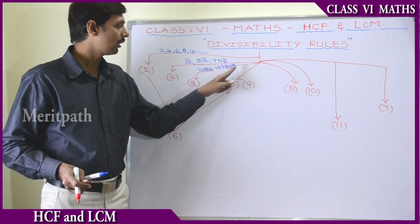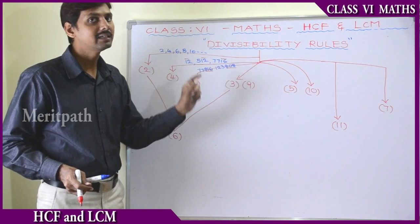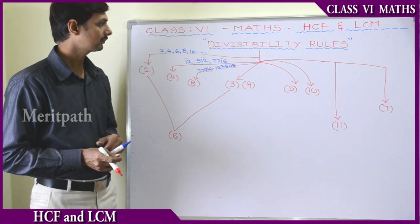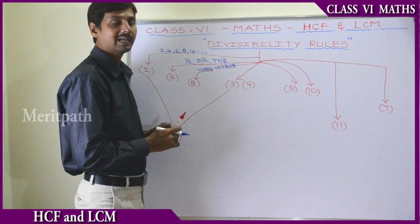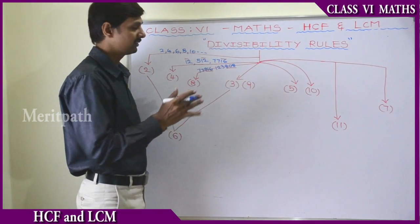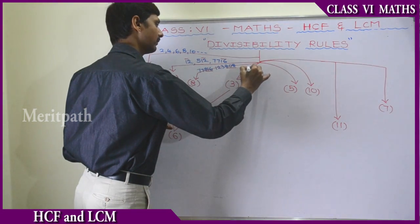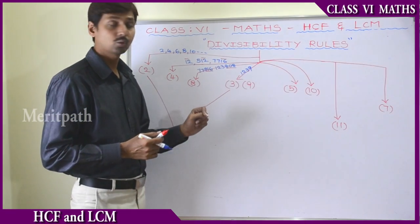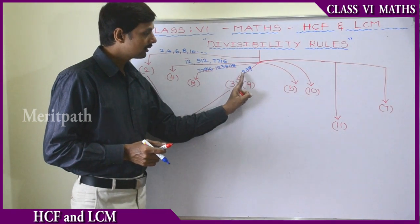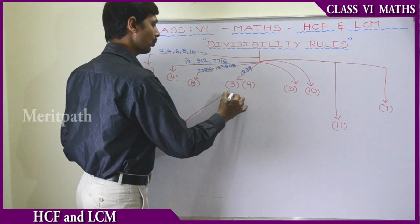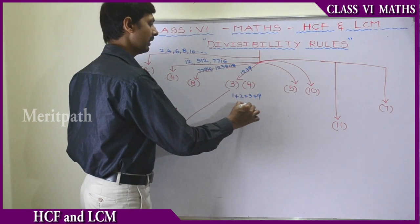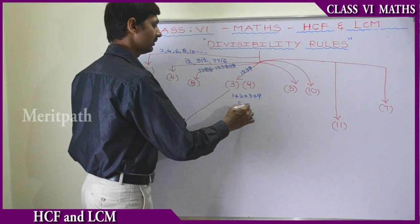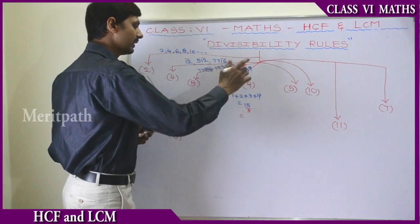Let's go to the property of 3 and 9. For divisibility by 3: if the sum of the digits of a number is divisible by 3, then the whole number is divisible by 3. For example, take 1239. The sum of all digits is 1+2+3+9 = 15, and 15 is divisible by 3. That is the reason the whole number 1239 is divisible by 3.